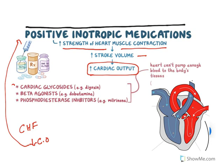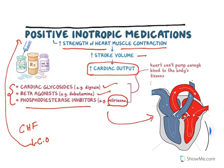There are three classes which belong to positive inotropic medication: cardiac glycosides like digoxin, beta-agonists like dobutamine, and phosphodiesterase inhibitors like milrinone and enoximone. All these are used to increase cardiac contraction. In this video we will focus on cardiac glycosides.